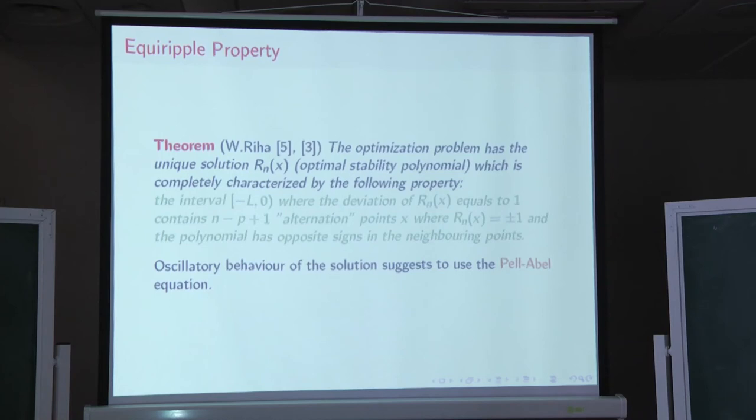So, the formula could be made efficient in terms of Riemann theta functions or Schottky functions. The Schottky functions, it was made in 2004, and the Riemann theta functions five years after that is my student Artyom Asfandiyarov. So, there is a theorem, which is due to Austrian mathematician, Willi Riha, from Wien, who proved that this optimization problem has exactly one solution, which is now known as optimal stability polynomial. And this solution is completely characterized by the following property. That is, on the interval, it is the largest interval, the stability interval, where the deviation of polynomial is equal, or less so equal to one, it contains exactly this number of alternation points.